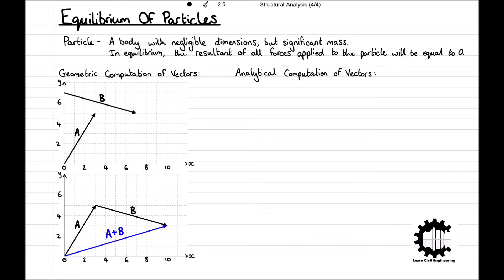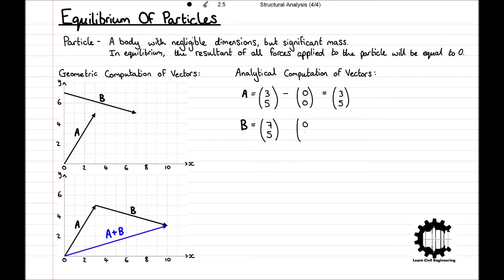Analytical methods make use of coordinate systems to denote the components of the vectors. For example, using the x and y coordinate directions in the diagram, the head of vector A has an x coordinate of 3 and a y coordinate of 5. The tail of vector A is at the origin, so the magnitude of vector A can be represented by subtracting the position of the tail from the position of the head, resulting in a magnitude of 3 in the x direction and 5 in the y direction. The head of vector B is located at a separate point, and subtracting the tail from the head results in a magnitude of 7 in the x direction and negative 2 in the y direction.